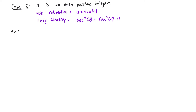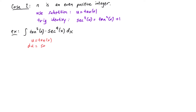Let's consider the example integral of tangent squared of x times secant to the fourth power of x dx. We'll start by making the substitution u equals tangent of x. Then taking the derivative, we get that du is equal to secant squared of x dx.